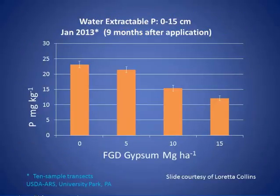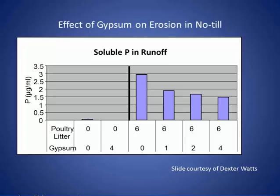This is a slide showing how FTG gypsum can reduce the water-soluble phosphorus in soil with increasing rates. And this is a slide showing — some of the same material that Dexter showed — where when you apply manure you get a large increase in soluble phosphorus coming off the field, and then as you increase the gypsum rates, you reduce the phosphorus in runoff.